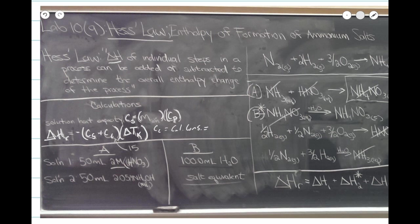The calorimeter constant C_c is equal to 15 joules per Kelvin. We're going to be working in joules per Kelvin units, which is why we're doing the temperature in Kelvin.